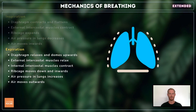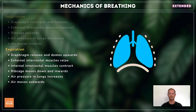When breathing out forcibly, for example during exercise, the diaphragm relaxes and domes upwards, and the internal intercostal muscles contract, pulling the ribcage downwards and inwards. These actions serve to decrease the volume of the thorax and lungs. As a result, air pressure within the lungs increases and air is forced outwards.